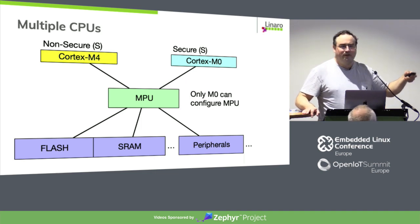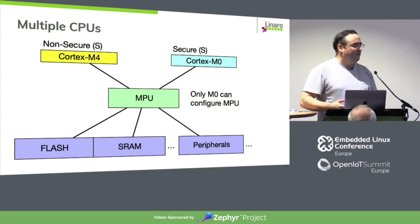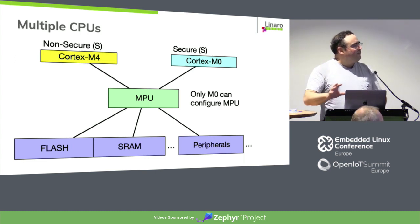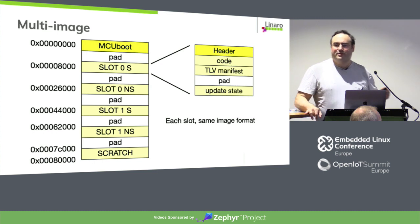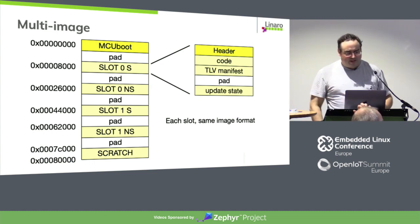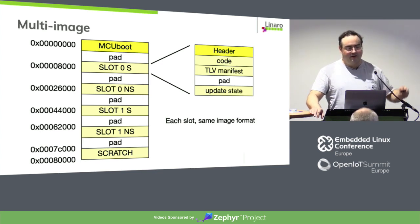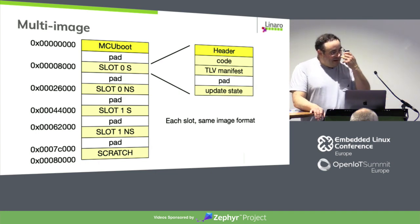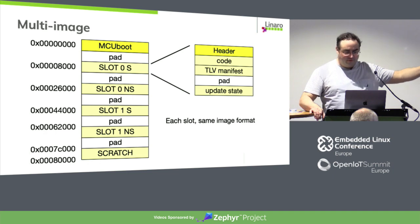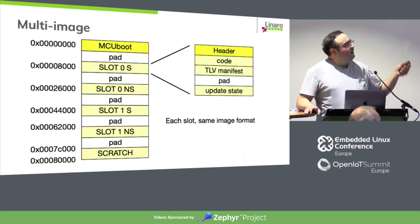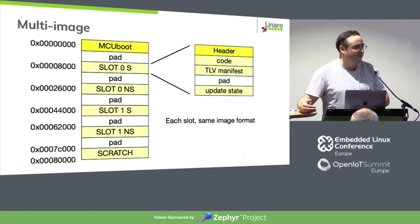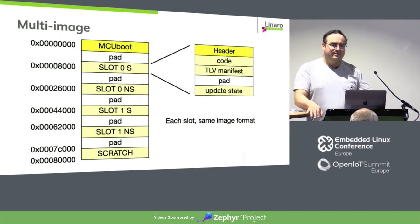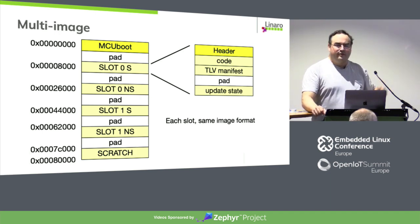We have flash, SRAM, and peripherals, and two processors allowed access to them. This is typically divided into a secure and a non-secure processor, where certain kinds of secure operations — signature management, management of secrets — are handled by a separate processor with its own allowed addresses. The idea is we chop up the flash into smaller pieces: slot 0 secure, slot 0 non-secure, slot 1 secure, slot 1 non-secure. Each has the same header, code, manifest, and update state.